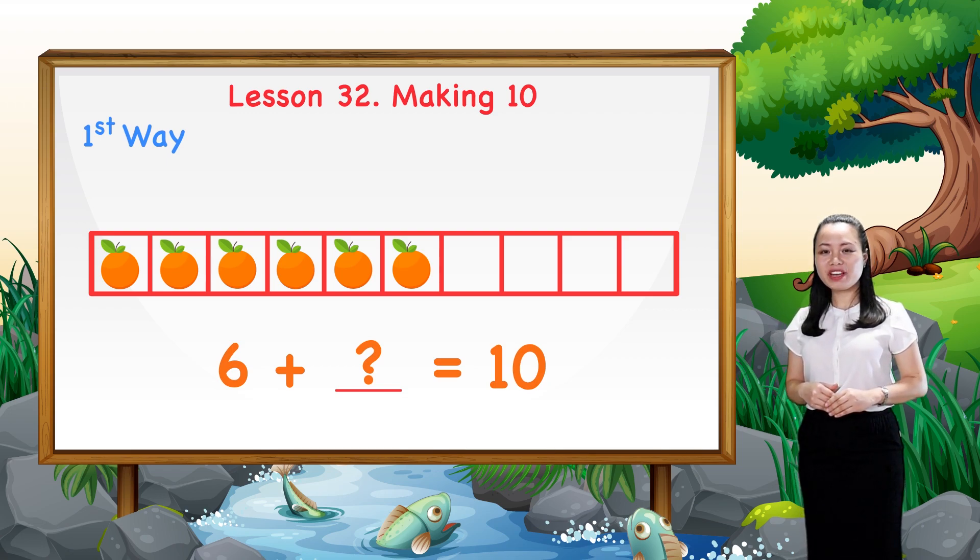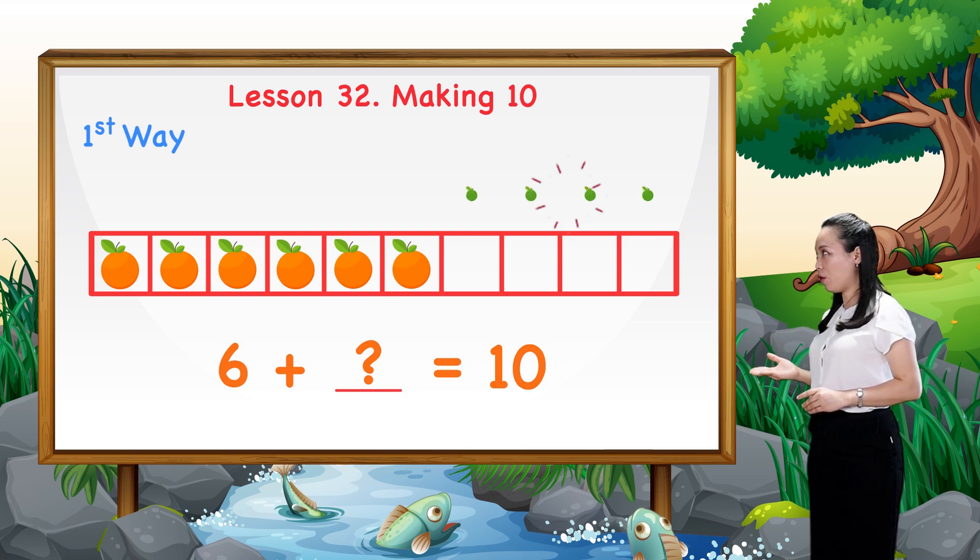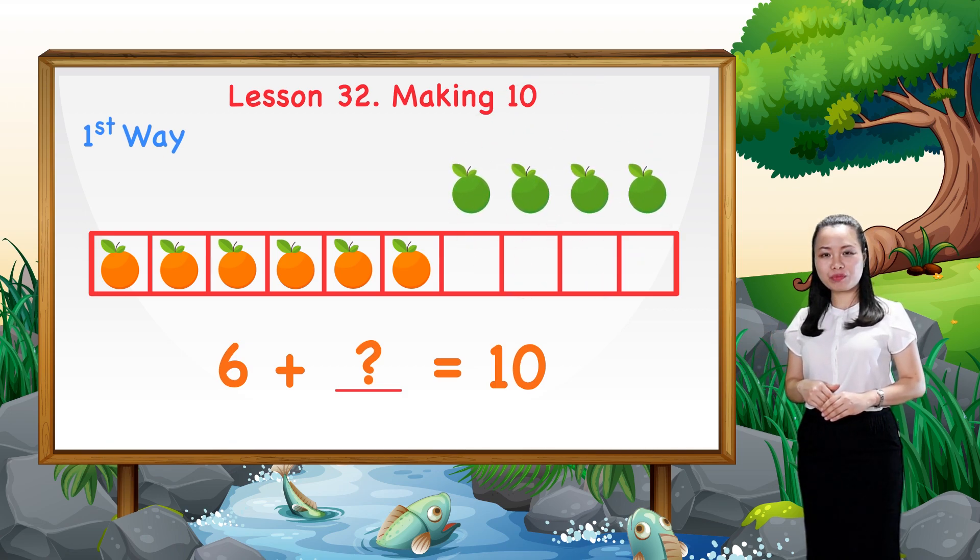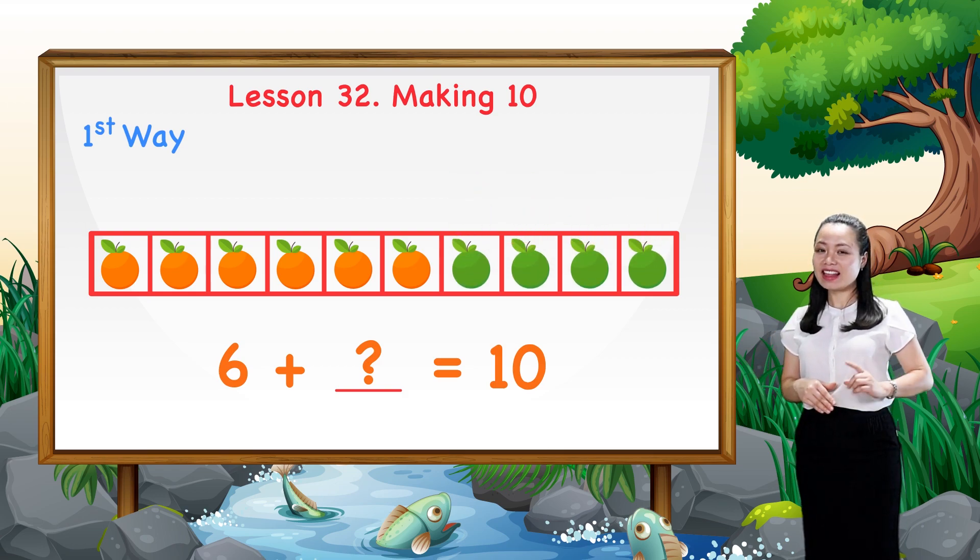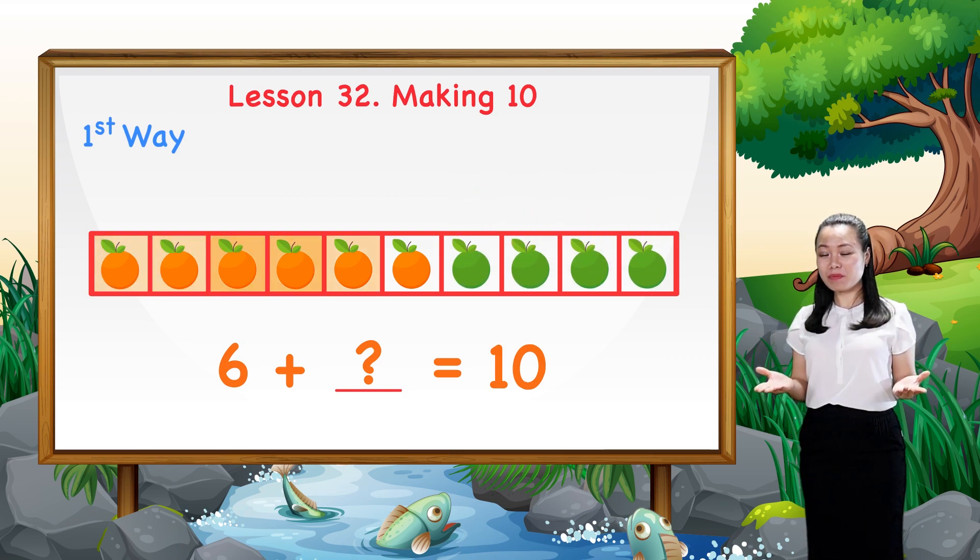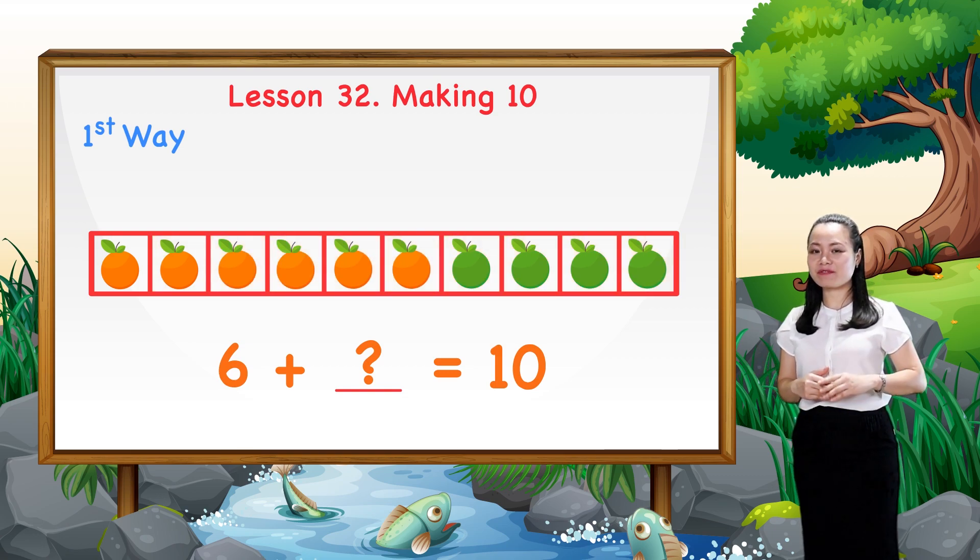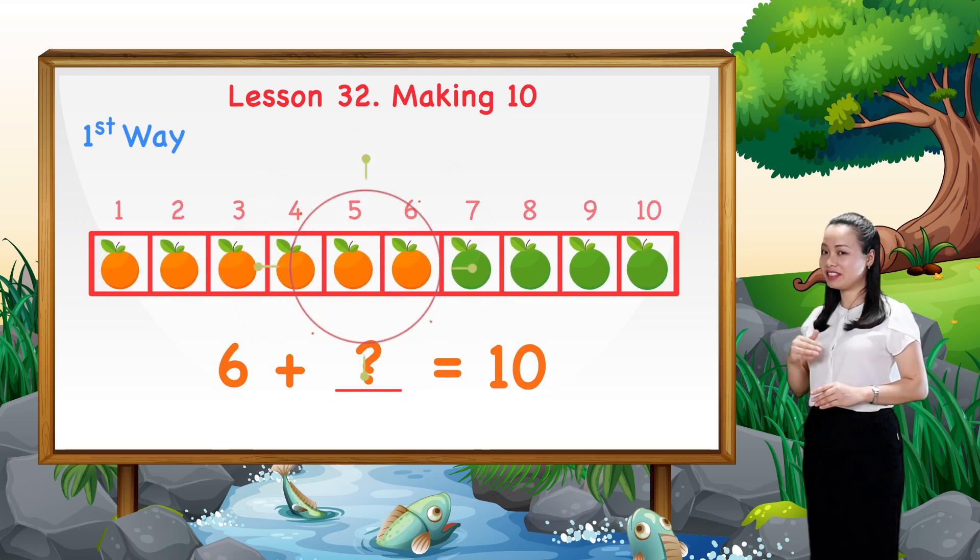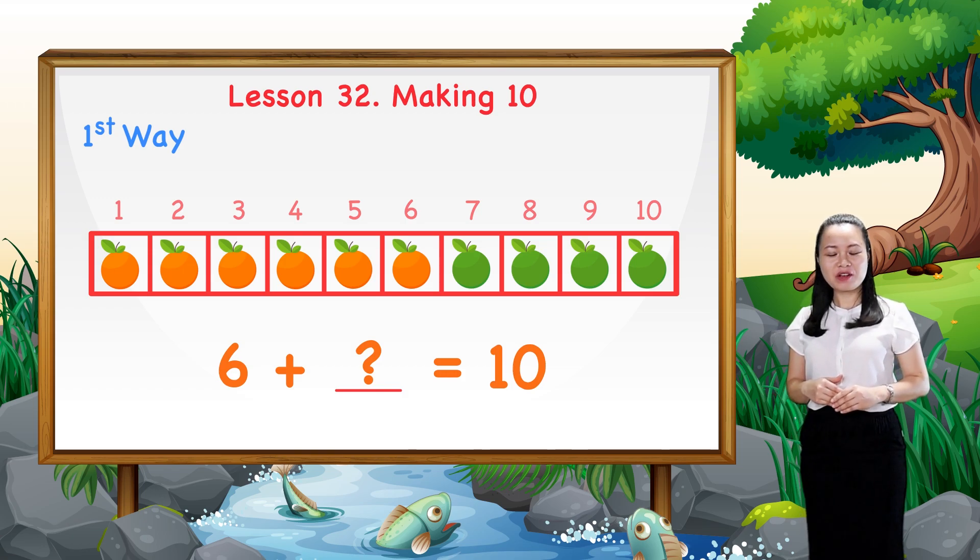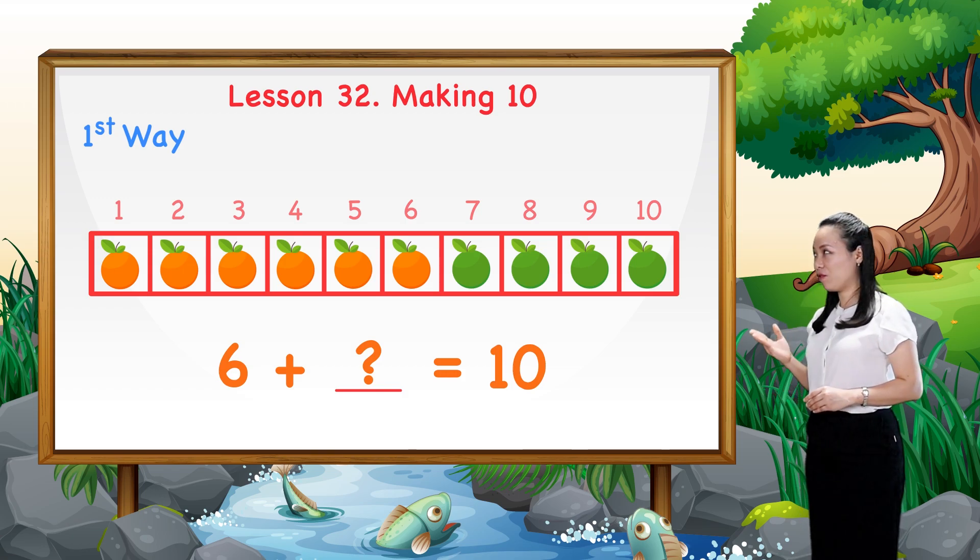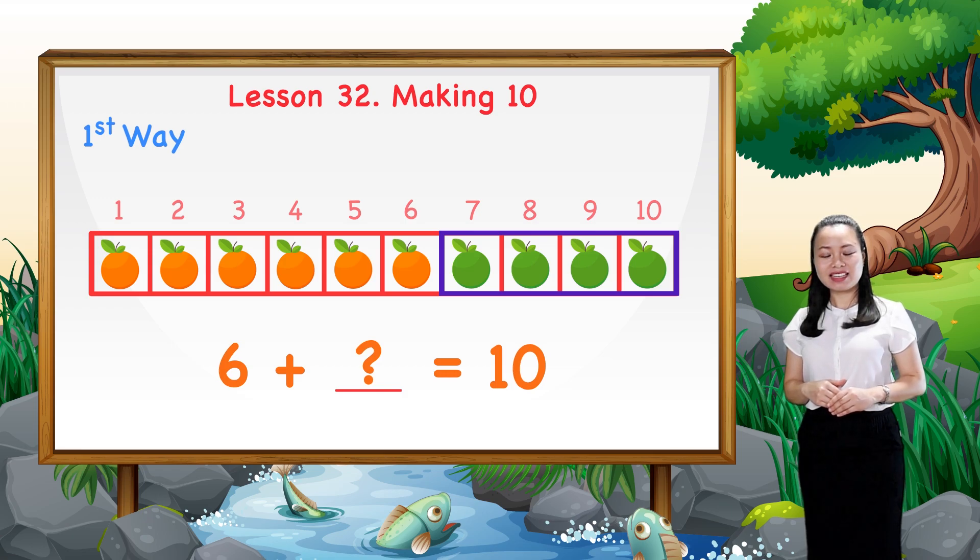If we have four more oranges to put in these empty boxes, then all the boxes are filled up and we have ten oranges now. So, we need four more oranges to have a total of ten.